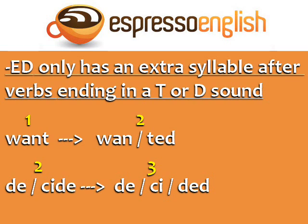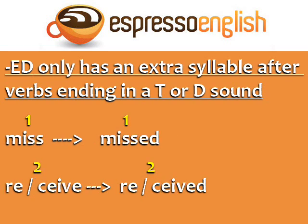With verbs ending in a T or D sound, the ED adds an extra syllable. In all other verbs, the ED does not add an extra syllable.